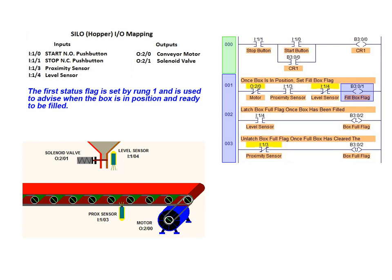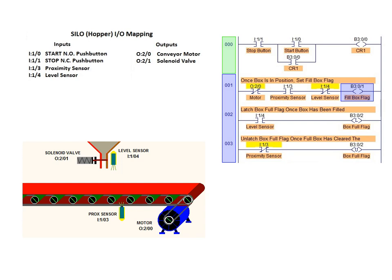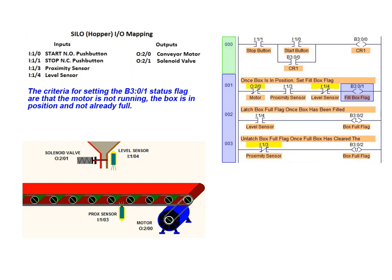The first status flag is set on rung 1 and is used to advise when the box is in position and ready to be filled. We will use the bit file address B3 0.1 for this status flag. The setting of this status flag is dependent upon three conditions: first, the motor cannot be running; second, the proximity sensor must detect a container at the fill station; and lastly, the level sensor must not be tripped, indicating that the box has not already been filled.